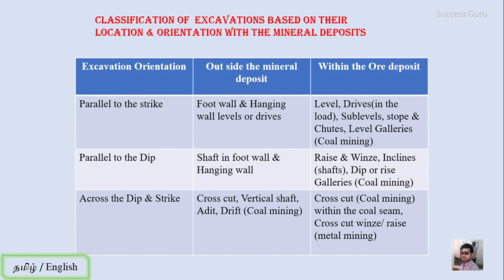Second, excavations parallel to the dip: if outside the mineral deposit they are called shafts in foot wall or hanging wall; if inside the ore deposit they are called rise and winze, incline shaft, dip, or rise galleries in coal mining. Third, excavations across dip and strike — those not having a relationship with strike and dip: if outside the ore deposit they are called cross cut, vertical shaft, adit, or drift in coal mining; if inside the mineral deposit they are called cross cut within the coal seam, or cross cut, winze, or rise in metallic mineral mining.